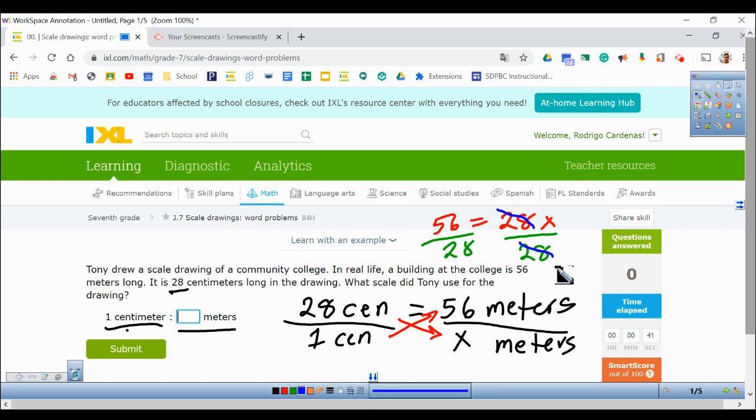That leaves me X by itself. And now I find out what is 56 divided by 28, and I get that 56 divided by 28 gives me 2.